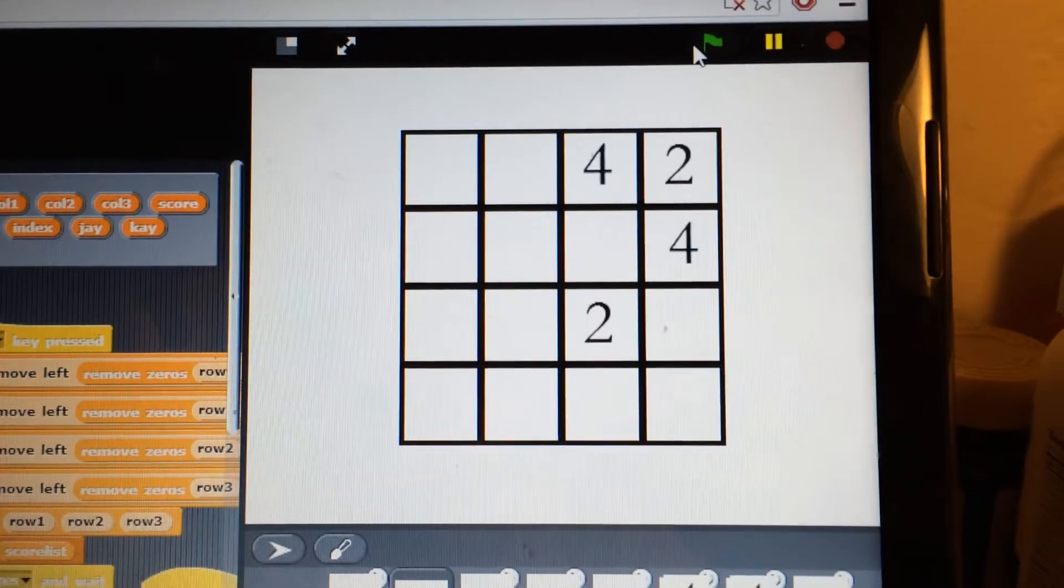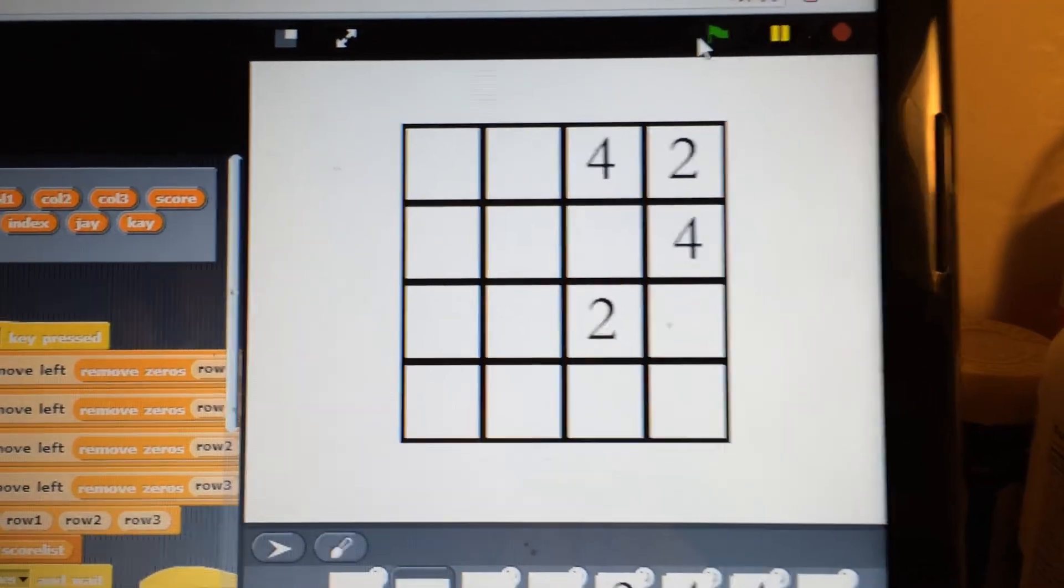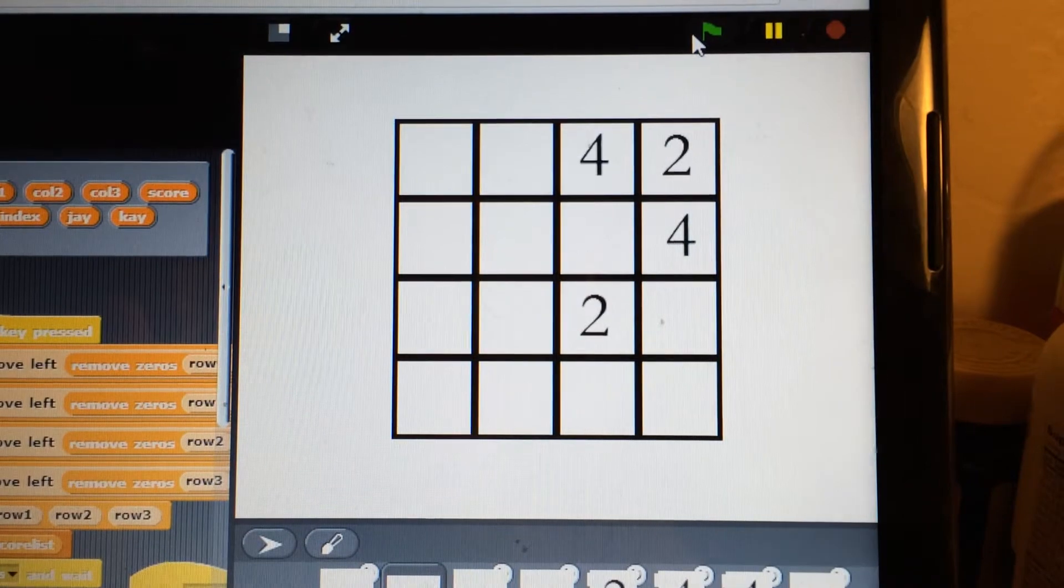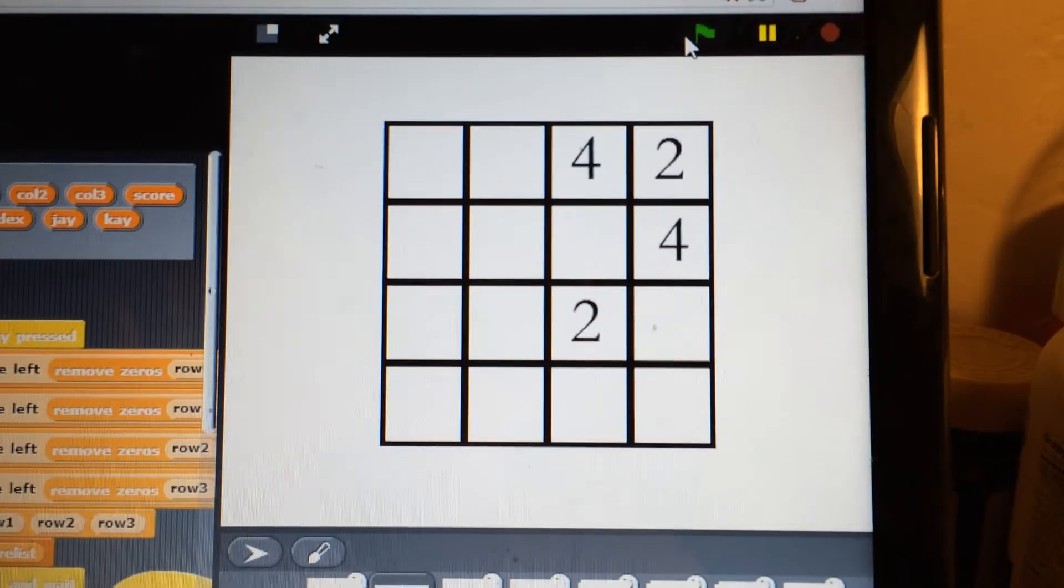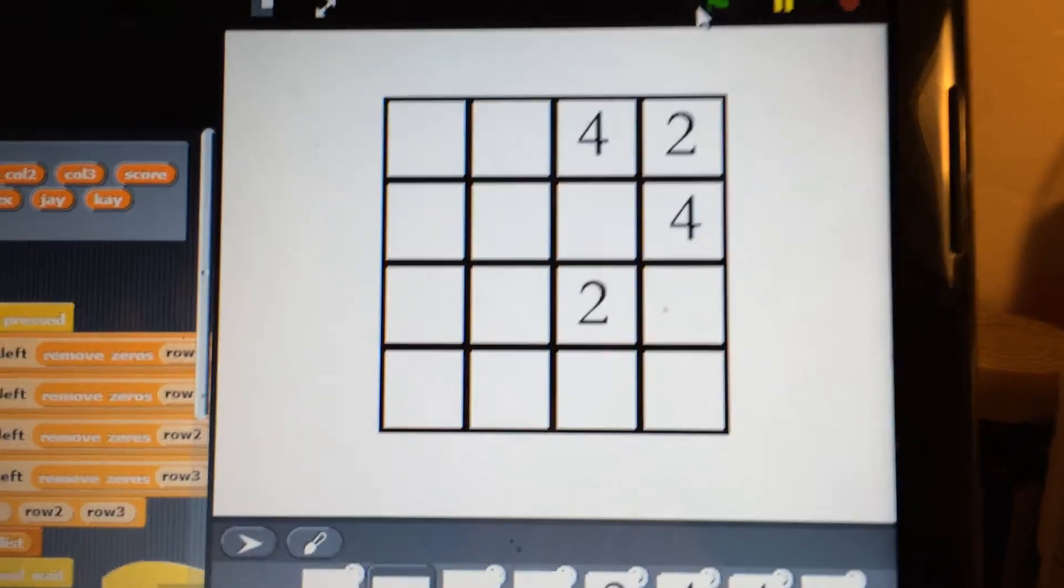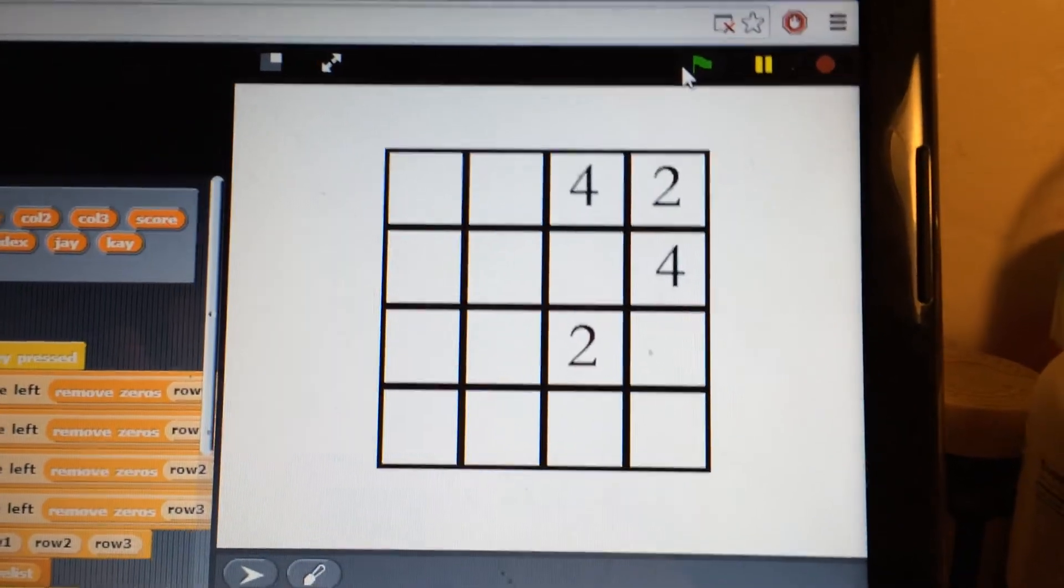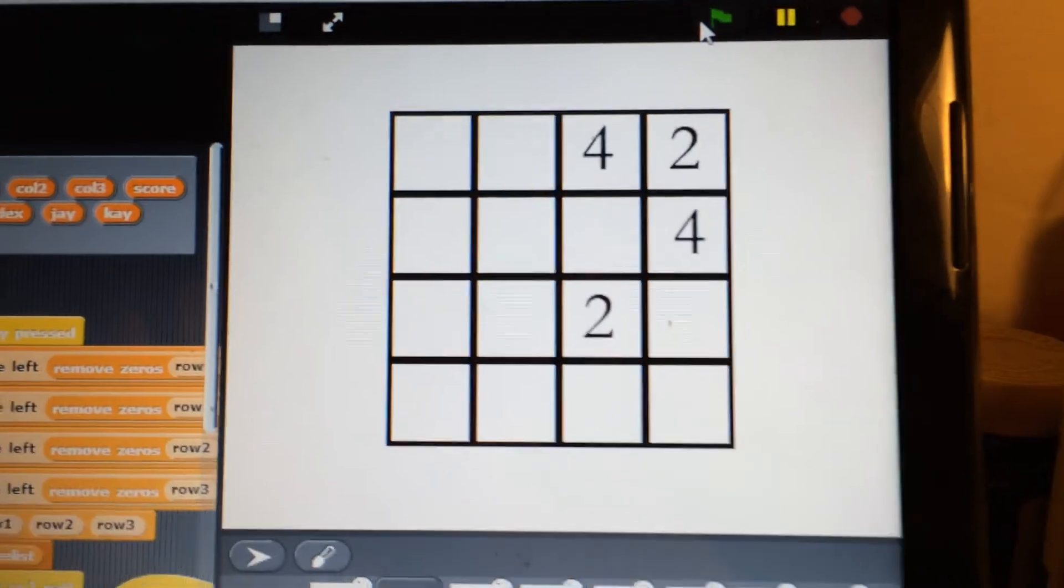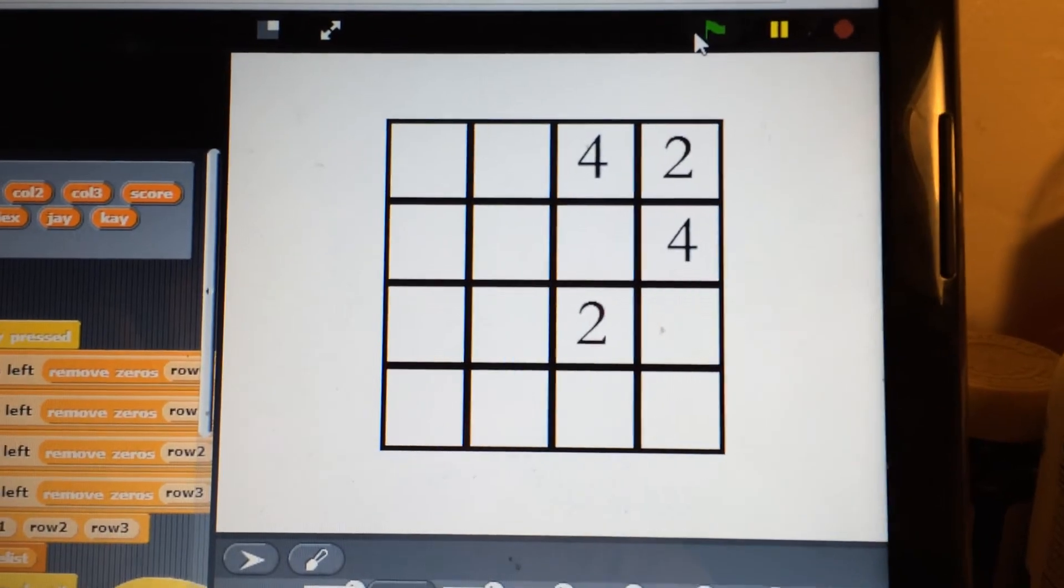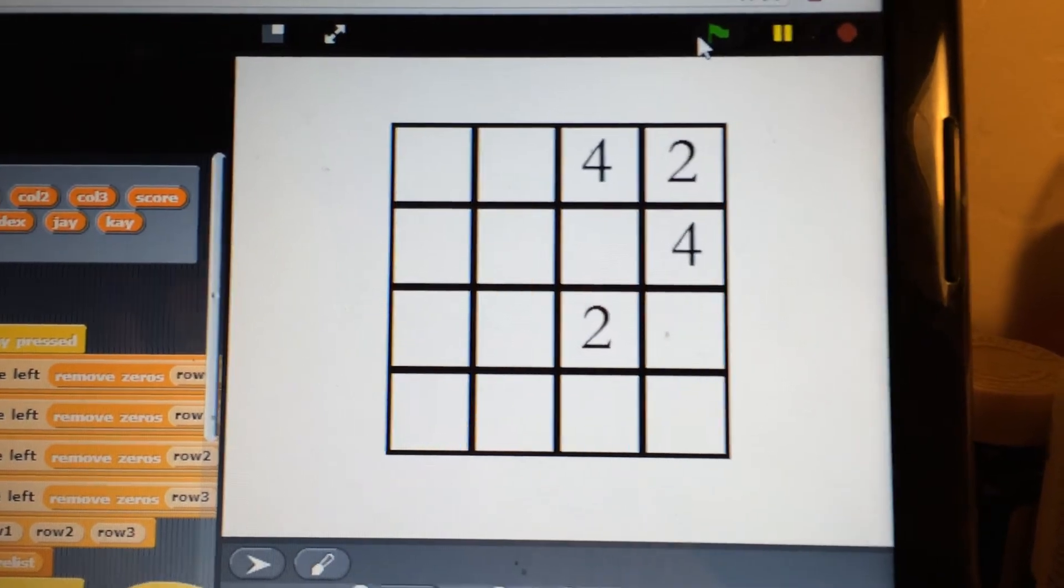Now the goal of the game is to keep combining numbers until you get to the number 2048. However, there is a catch that is always going to be a randomly generated two at the end of every move. So this makes the game tricky in the sense that you have to get to the 2048 tile before your board is all full of numbers.